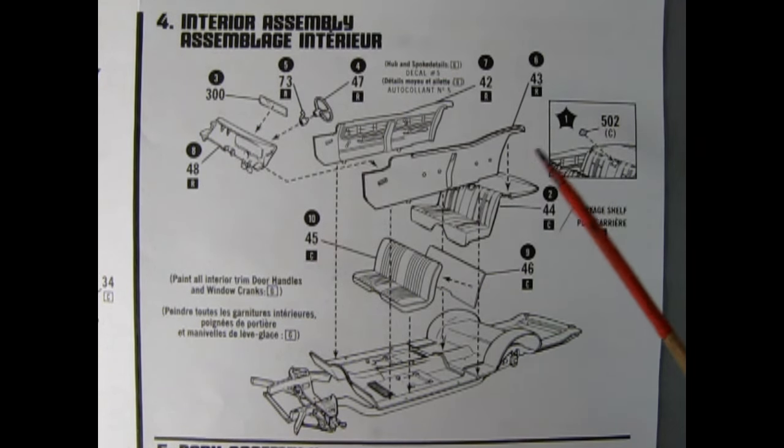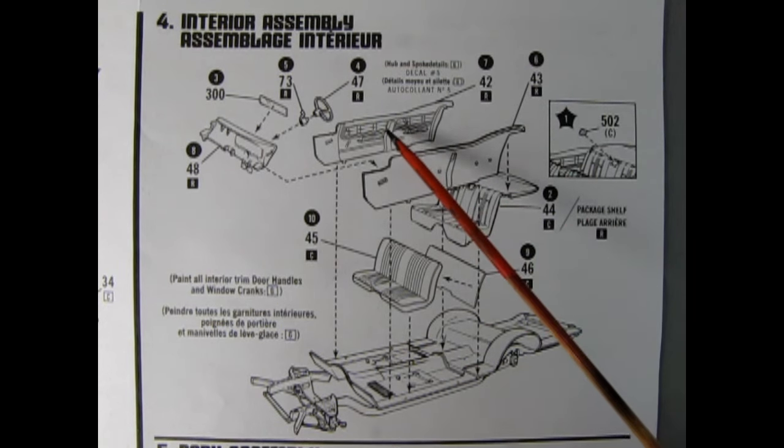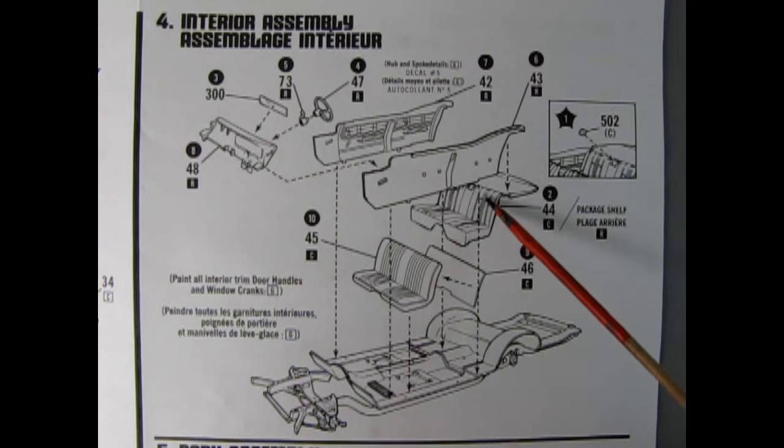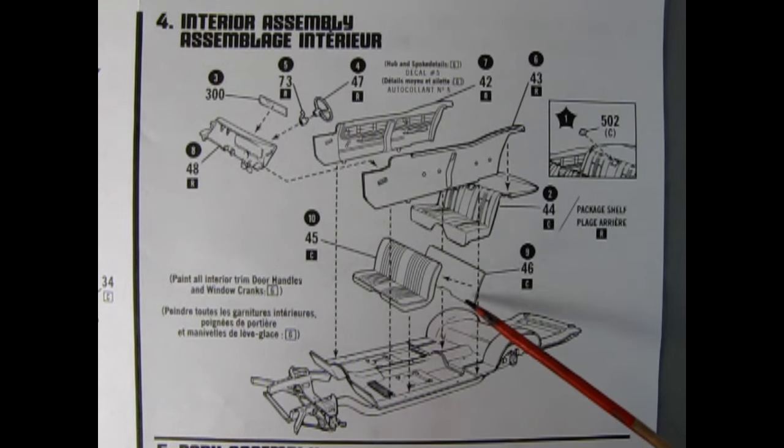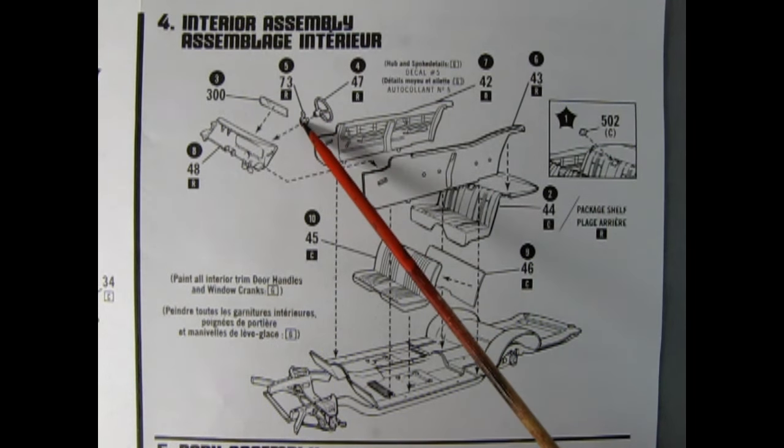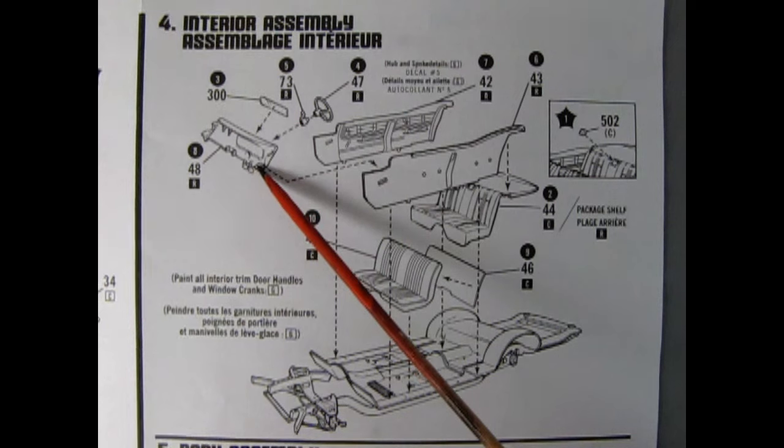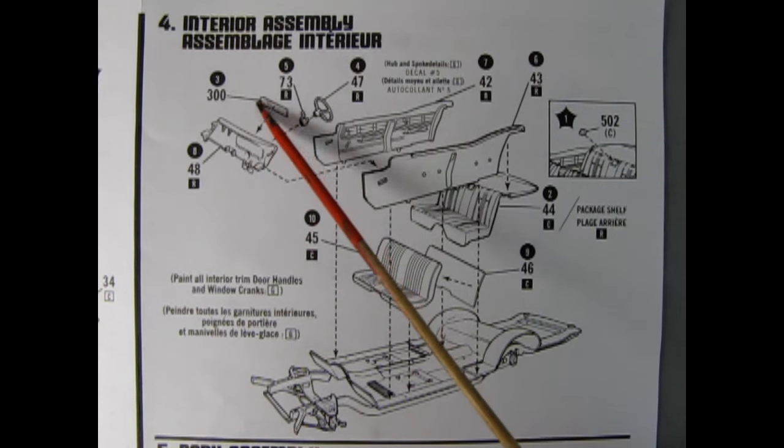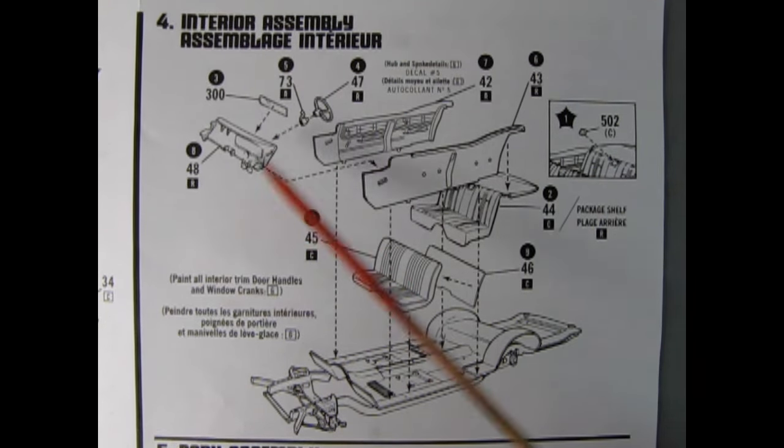Step four, interior assembly. Here we have our interior being glued together. What we have is two separate side panels which would go down onto the floorboards as well as the rear bench seat and the front bench seat which is molded in two pieces. There is an emblem which goes into the center of that rear seat. We also have our steering wheel and our shift column and the lever that goes onto the dashboard, and there is also a clear panel which covers up those gauges.